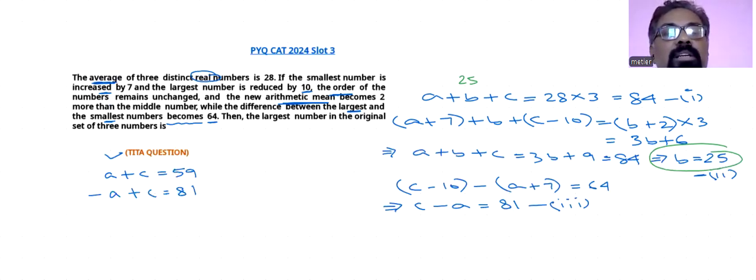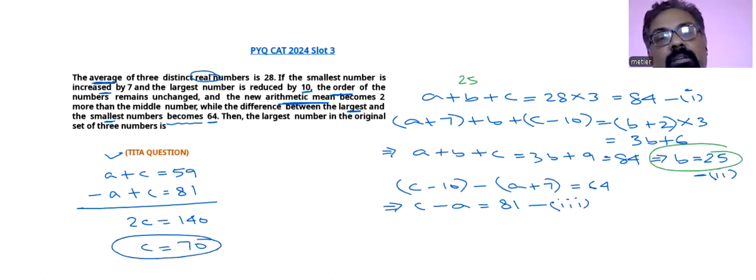So what we are getting here, if you simplify this, it will be coming as 2c equals 140, and your value c will be coming as 70. That's your answer. Now we already calculated c is 70, that one is your answer.